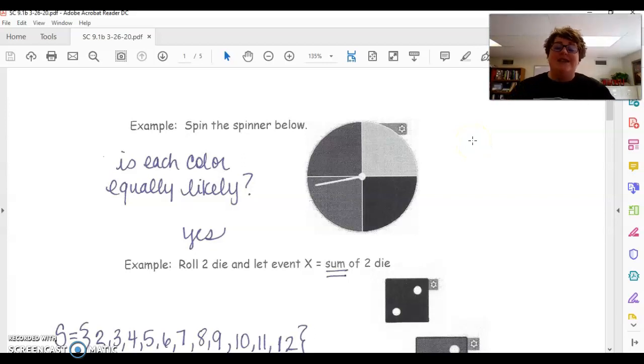But just looking at the spinner, is each color equally likely? And yes, because each quarter, each part, each color is a fourth or 0.25. The probability of hitting each color is 0.25, so all of these are equally likely.